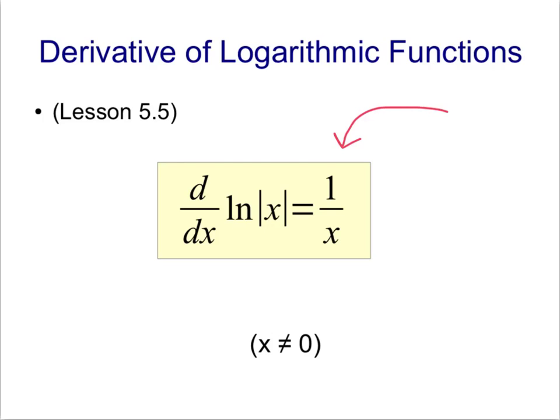Typically, we write this as the derivative of the natural log of x is 1 over x. Because certainly, if the derivative of the natural log of the absolute value of x is 1 over x, then the derivative of the natural log of x is 1 over x. Keep in mind that x can't be 0 because that would be undefined. In fact, the natural log function has a domain where x is greater than 0.